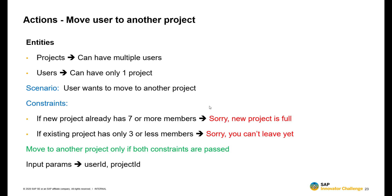In our hypothetical situation, if the new project already has seven or more members, then we do not approve that move — we return something saying that the project is full. And if the existing project, the current project that the user is working on, has only three or less members, then we don't let the user move as well.